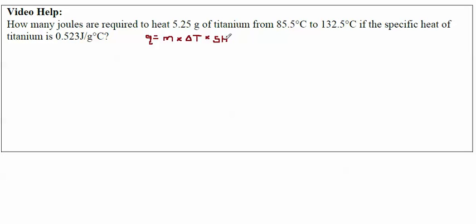Okay, and so this is the formula that you would get on a test, and now we're just going to figure out what each thing is by reading the problem. So it says how many joules are required to heat 5.25 grams of titanium, so grams are the units of mass, this is mass.